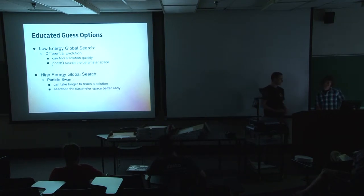So we have a couple different options that we can use for our educated guesses. So we have a low energy global search option, which is the differential evolution. And it can find a solution quickly, but it doesn't necessarily search the entire parameter space. So the benefit here is that we get a quick convergence to an answer. The problem is it's not always the best answer. Then we also have high energy global search solutions, which they're high energy, so they get to spread out in the parameter space and search the parameter space more thoroughly. But this takes longer to run. But you're more likely to get to the global best if you're using the particle swarm versus the differential evolution, because it's a higher energy search solution.